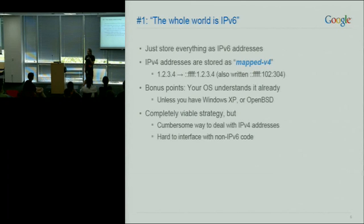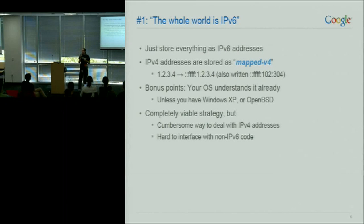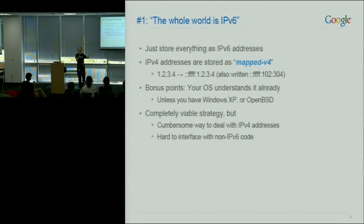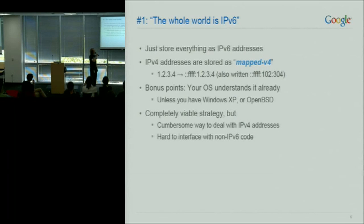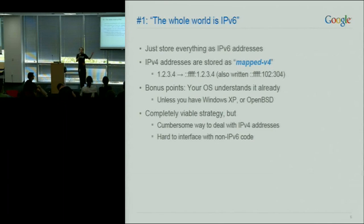The first strategy, the obvious one: if you're writing things from scratch, you can pretend that IPv4 and IPv6 are the same thing. This is basically what your operating system probably already does. If you open an IPv6 socket and set it as dual stack, and people connect over IPv4, you'll get a special IPv4-mapped address in the v6 space. This gives you those weird-looking FFF addresses, but you can just pretend it's all IPv6 and move on.